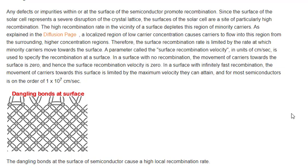Therefore, the surface recombination rate is limited by the rate at which minority carriers move towards the surface. A parameter called the surface recombination velocity, in units of centimeters per second, is used to specify the recombination at a surface.